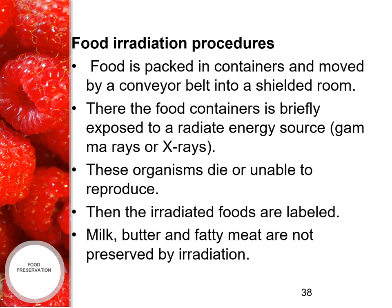Food irradiation procedure: food is packed in containers and moved by a conveyor belt into a shielded room, where the food containers are briefly exposed to a radiant energy source such as gamma rays or X-rays. These organisms die or are unable to reproduce. The irradiated foods are then labeled. Note that milk, butter and fatty meat are not preserved by irradiation.